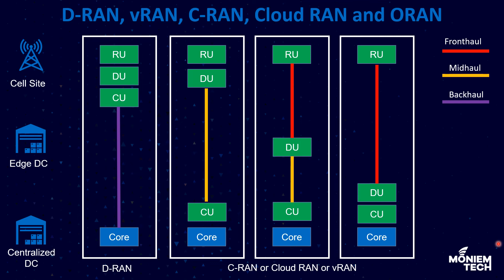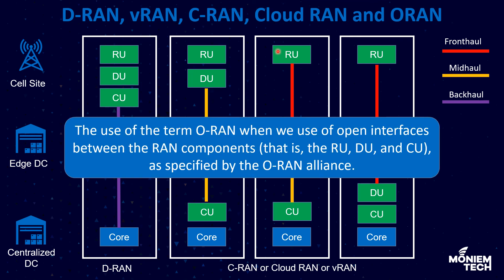When CU and DU are implemented as cloud-native functions — typically containers — the deployment is called cloud RAN. It can be hosted on public cloud platforms like AWS, Google Cloud, or Azure, or on a private cloud. Last but not least, the term O-RAN refers to the use of open interfaces between RAN components — RU, DU, and CU — as specified by the O-RAN Alliance. For example, in an O-RAN deployment, the fronthaul is open, so the RU can be from vendor A, the DU and CU software from other vendors, and the hardware from yet another vendor.